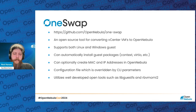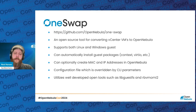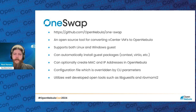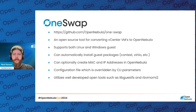We have a configuration file. Since there are so many options, instead of having to put in 20 command-line parameters, we just have a configuration file, which is overridden by command-line parameters. So you can use it almost like a default template for your conversions. It utilizes well-developed open source tools such as libguestfs — where the virt-v2v functionality comes from — virt-customize, and we also use the rbvmomi2 API, which is the Ruby wrapper for the vSphere API.